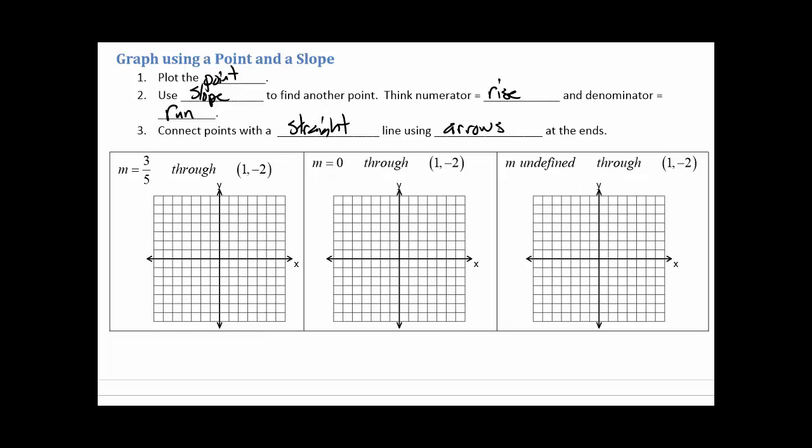Okay, so let me kind of model this here for you. Let's first plot the point one comma negative two, so one comma negative two there. And then from that point, I want rise of three, run of five. So I want to go up three, one, two, three. And I want to go run five, so one, two, one, two, four, five. And there happens to be another point on my line. So I just want to carefully connect those two points.